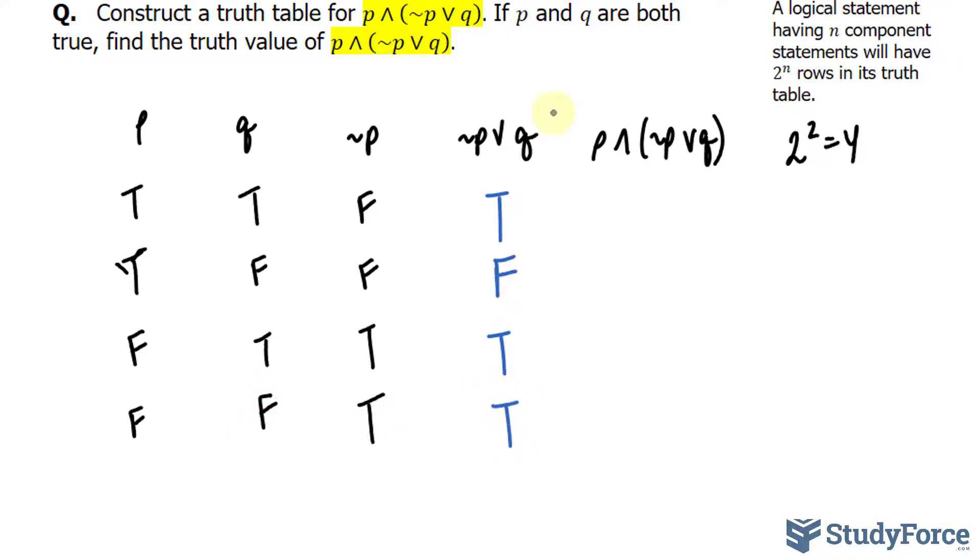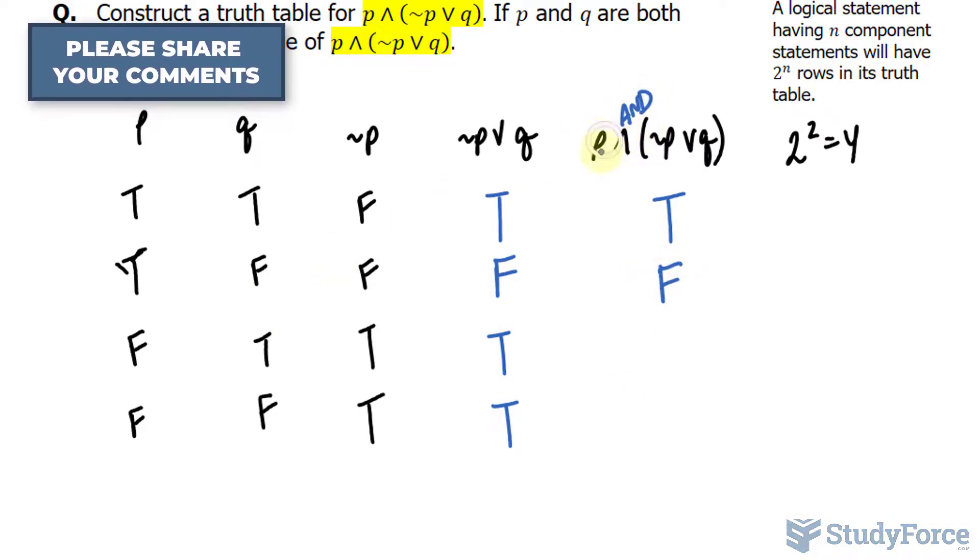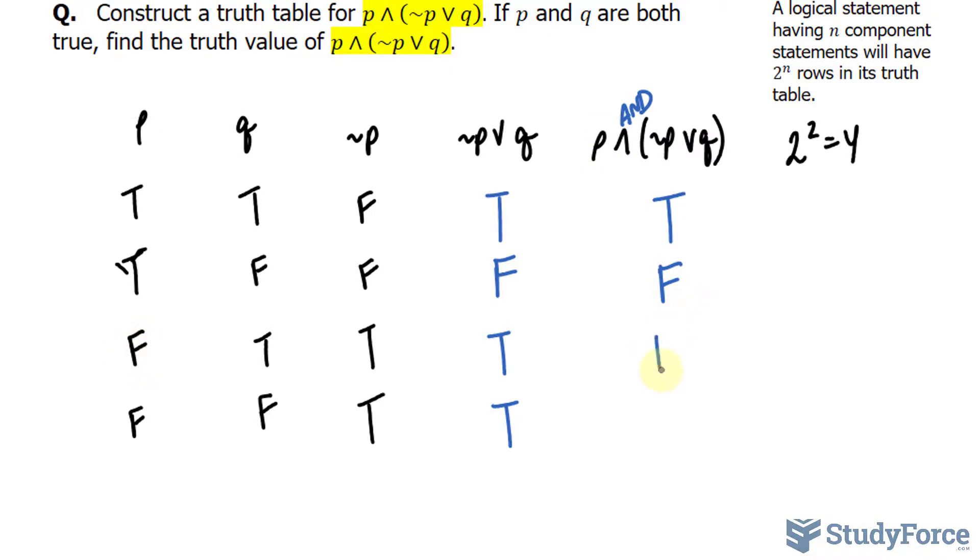And in our last column, p is true, and it is, and this also has to be true, and it is, so this is true. p has to be true, it is, but this one is false. Remember, this reads AND, so both conditions need to be met. p is true here, but it's false here. Automatically, it's an F. p is true here, it's false there. Also automatically, a false.